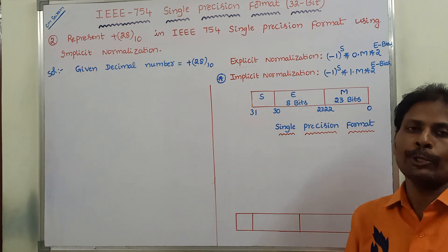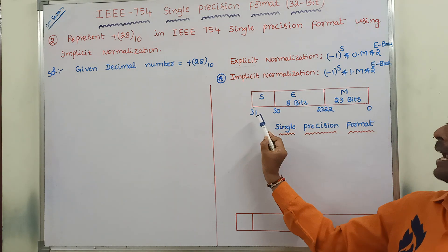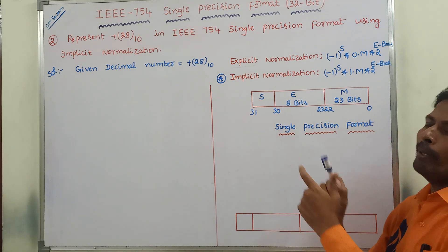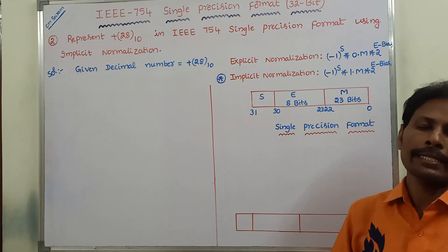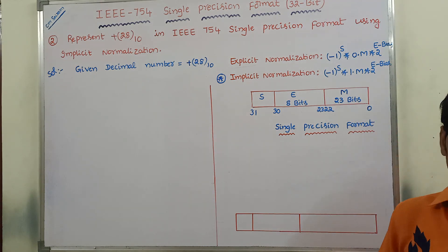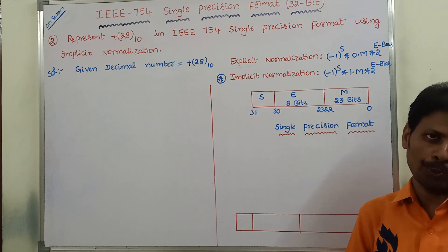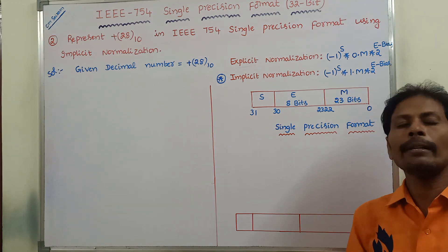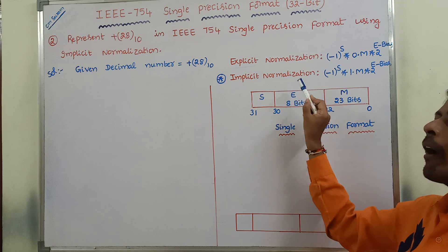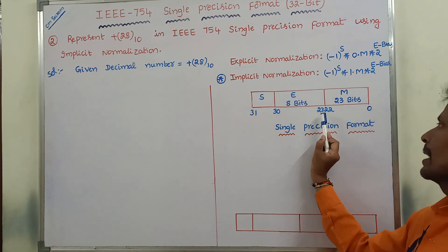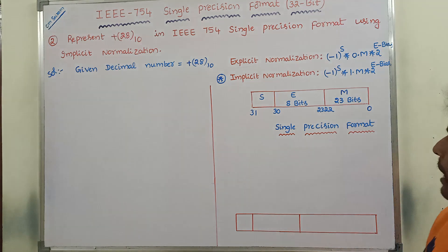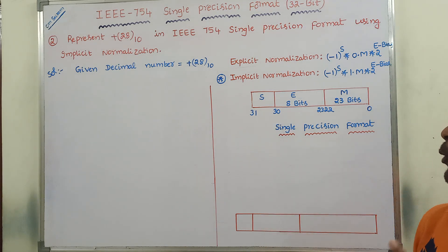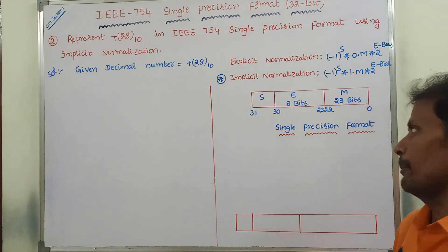The IEEE 754 single precision format contains 32 bits, starting from bit 0 and ending with bit 31. These 32 bits are classified into 3 fields. The first field is called mantissa, containing 23 bits from bit 0 to bit 22. Next is the biased exponent, containing 8 bits from bit 23 to bit 30. The last field is the sign bit, which is 1 bit at position 31.